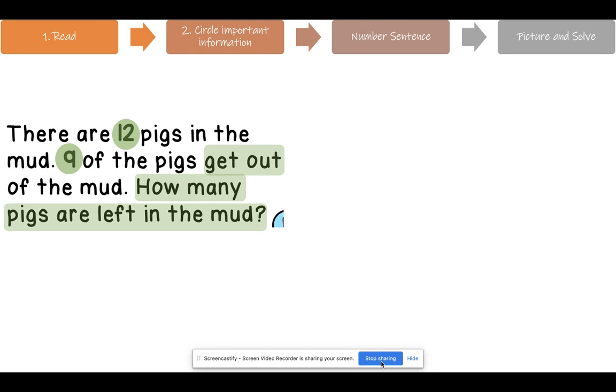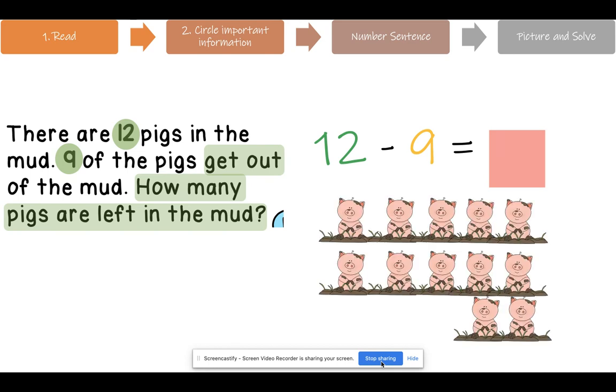Now that we have our important information circled, let's write our number sentence. What is that number sentence going to look like, friends? Did you say 12 minus 9 or 9 minus 12? Which one is it? Right. It is 12 minus 9. My start is 12 and my change is minus 9. And right now we're trying to find the difference. Now we're going to draw our picture. How many pigs are you going to draw? That's right. You are going to draw 12 pigs because that was our start. Now, since 9 of the pigs got out, how many pigs are we going to cross out? That's right. We're going to cross out 9.